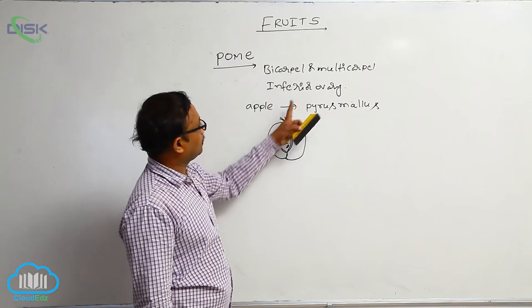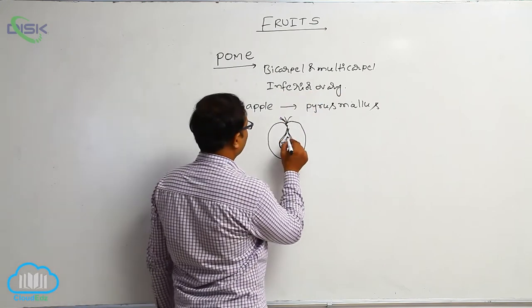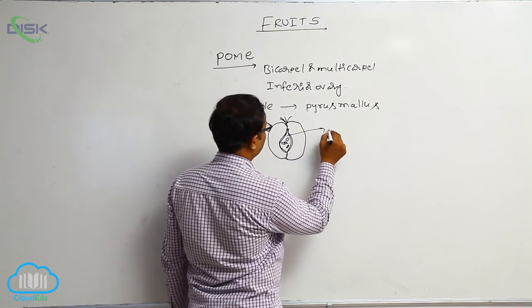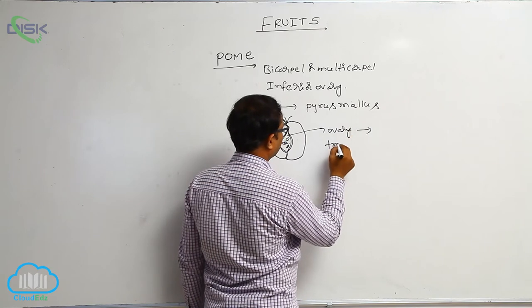It is formed from bicarpel or multicarpel inferior ovary. In this, the ovary converts into the fruit, the true fruit.